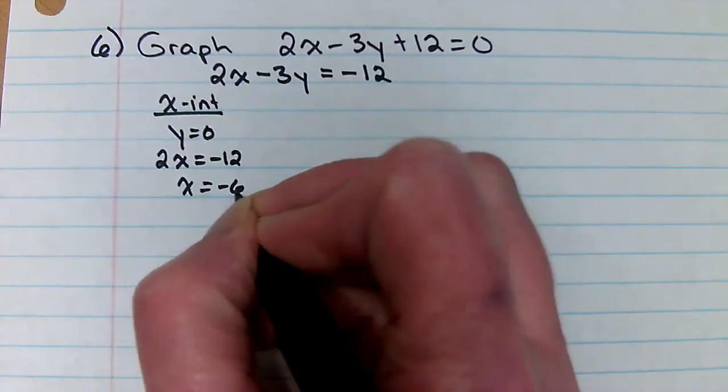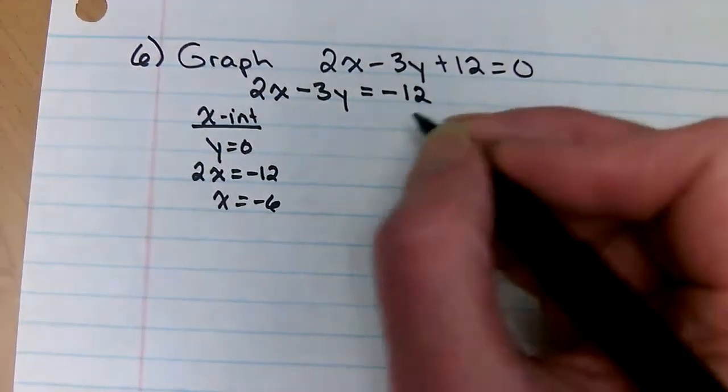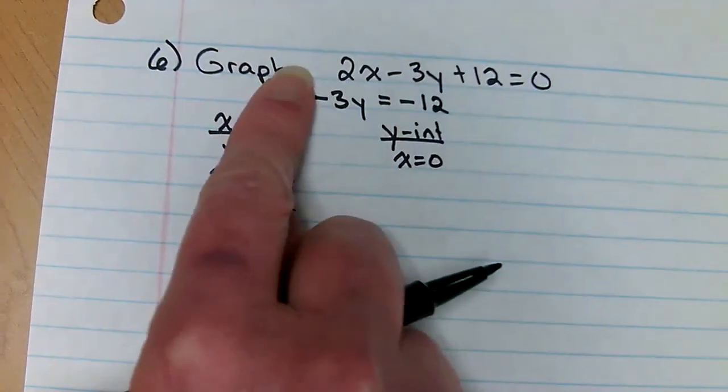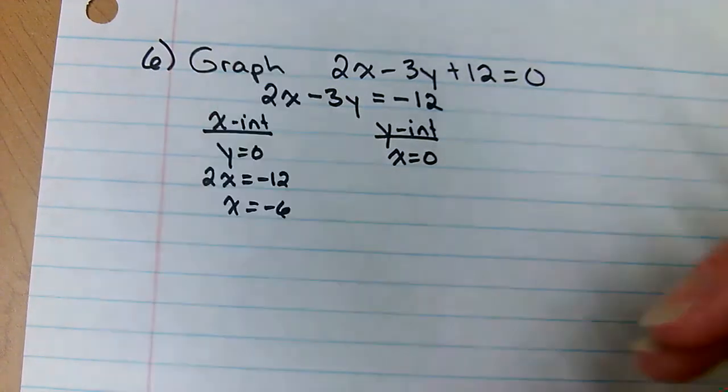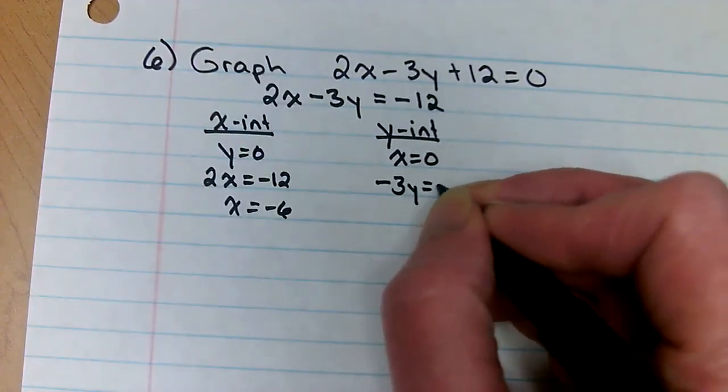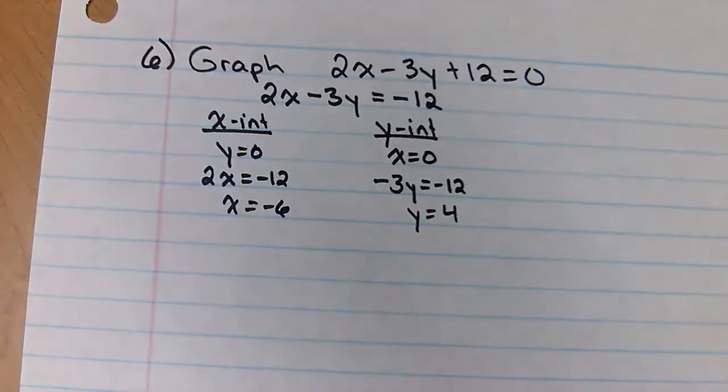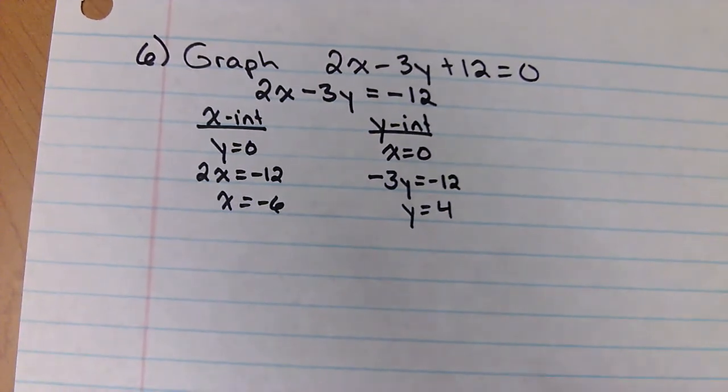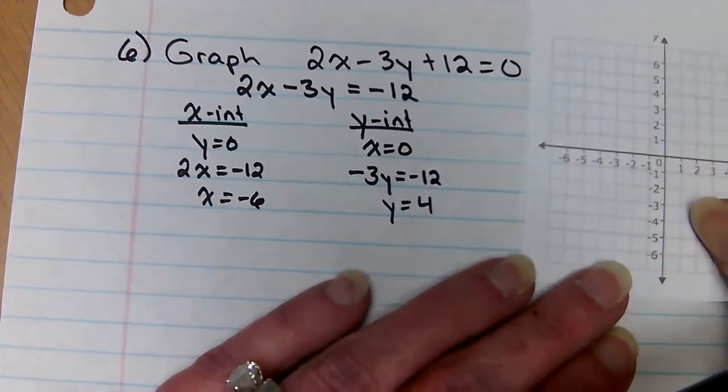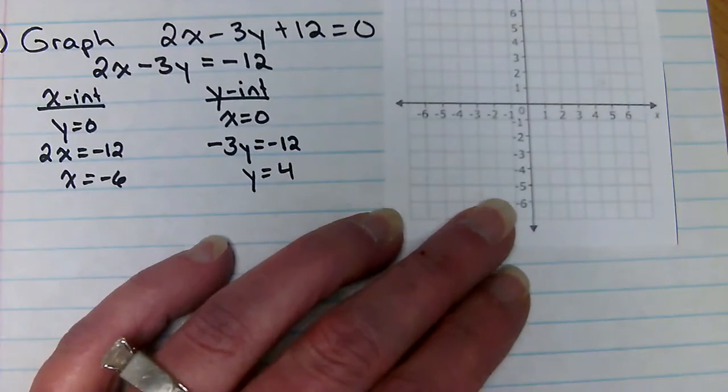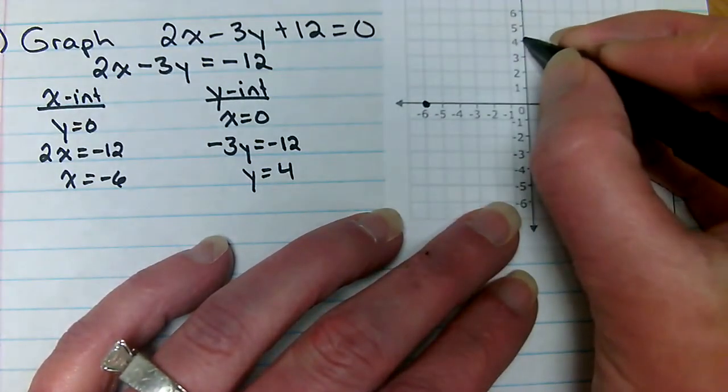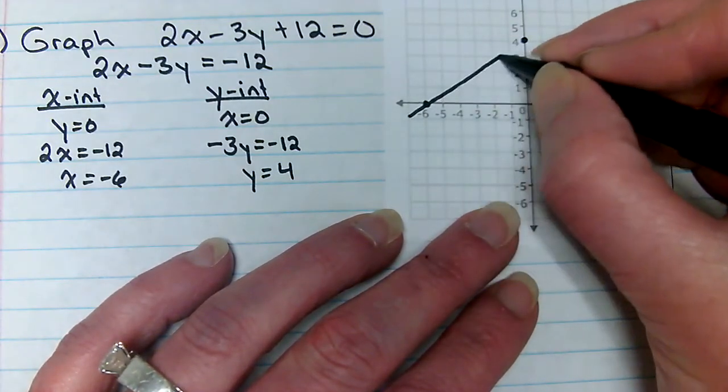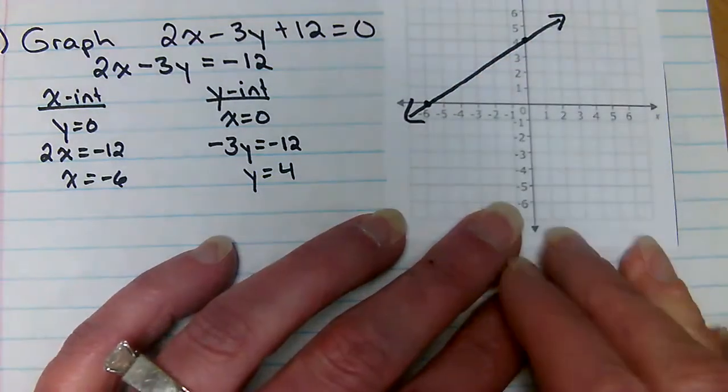The y-intercept is when x is zero, so I would cover that up. X is zero, that's gone. I get negative 3y equals negative 12. Y is four. So if I graph that, and I have a little graph here that I'm going to end up taping down in a second, my x-intercepts at negative six and my y-intercepts at four. And then it would just connect the dots.